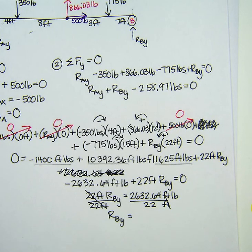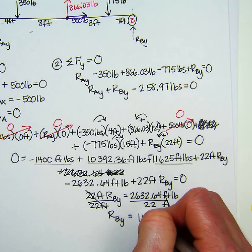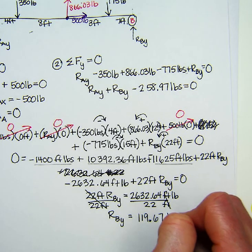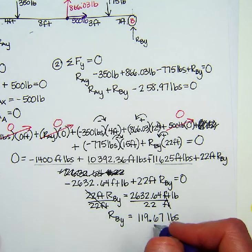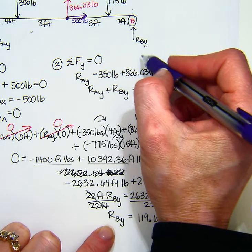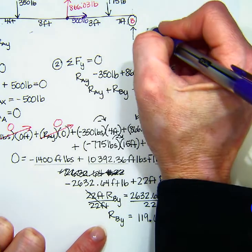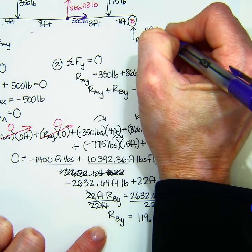So 2632.64 divided by 22. I get 119.67 pounds. So that goes up here. RBY is this one right here. And so this is 119.67 pounds.